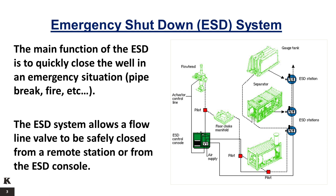The equipment consists of a pneumatic console which pressurizes the various pneumatic and hydraulic circuits, push-pull shutdown stations, and in some instances, high-low pressure pilots. In an emergency, either the pressure pilots or the manual ESD stations release the air pressure in the system. The hydraulic circuit is then bled off by the interface valve in the console and the fail-safe valve closes.